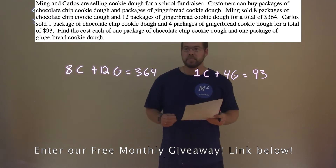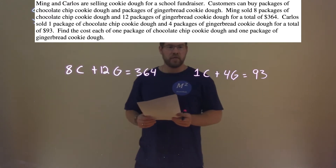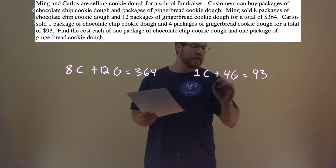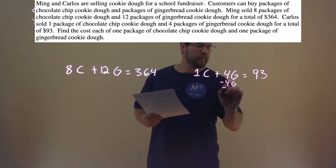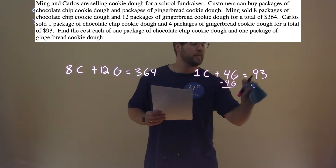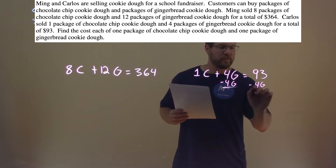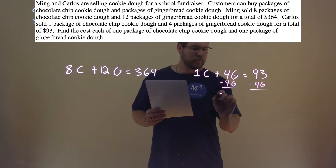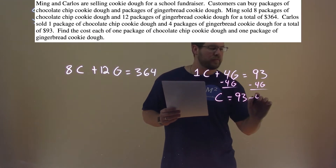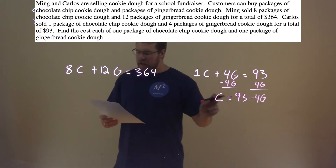So now we have a system of equations, and we can solve that. The way I'm going to do that is I'm going to get C by itself first. I'm going to subtract 4G from both sides. I'll just write C by itself — don't need the 1. And we have C equals 93 minus 4G. They are not like terms, we can't combine them, but now I have C by itself.